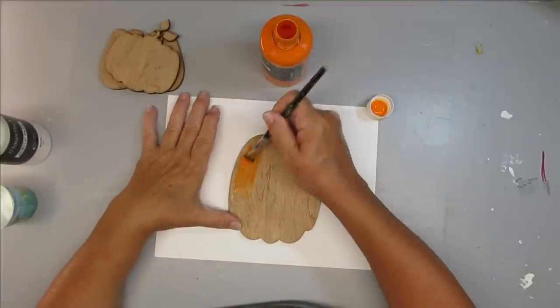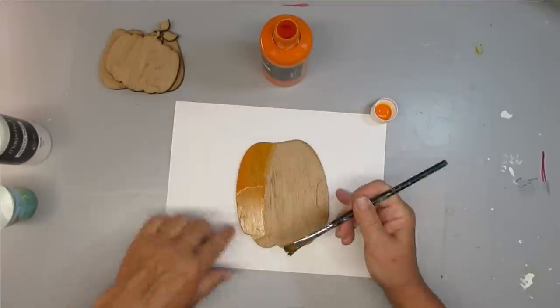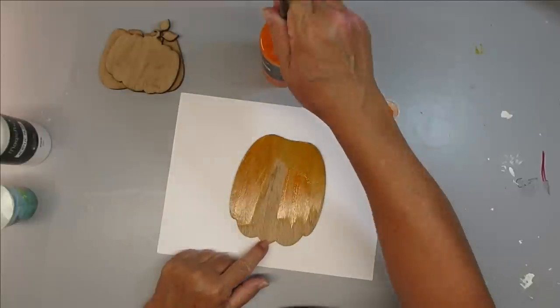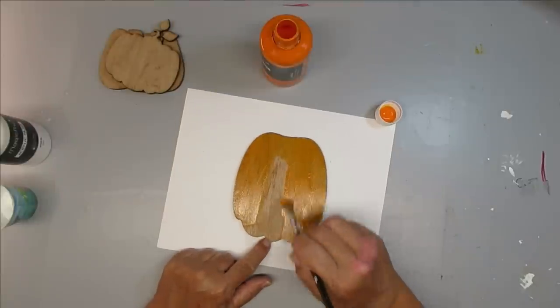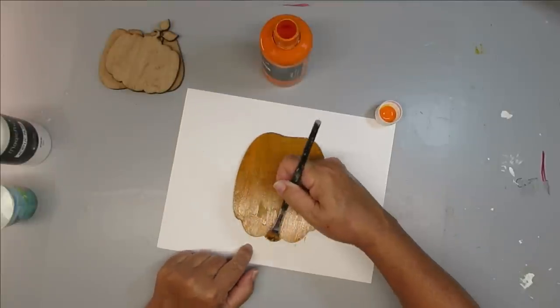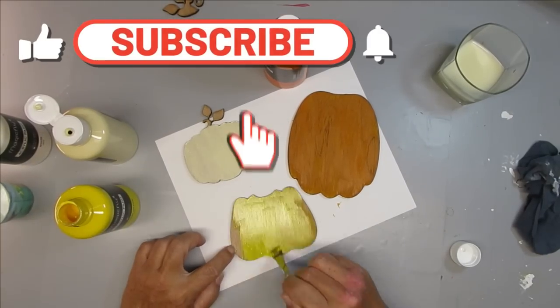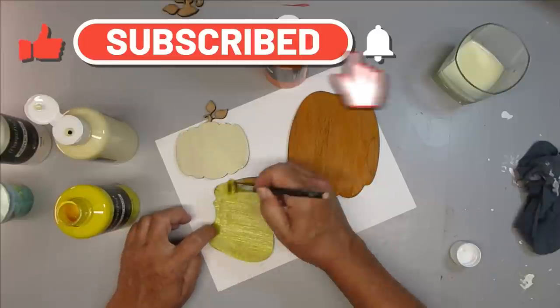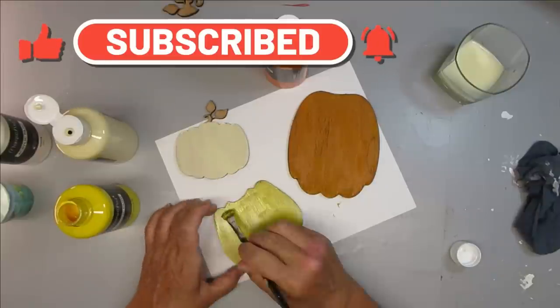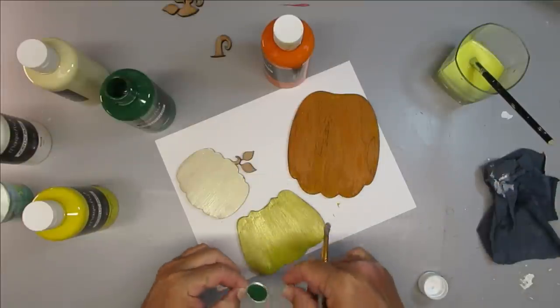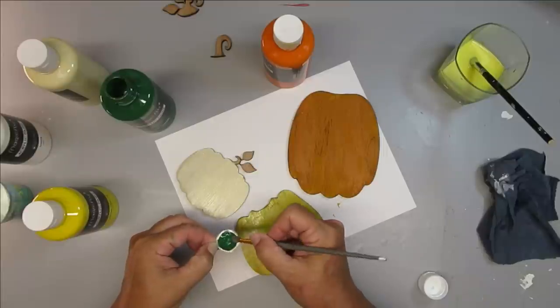I'm starting off my first project with these wood cutout pumpkins and I'm using the orange. Now it does come on more like a stain with the wood which is something that I actually like. I love being able to see the wood grain through. However if you wanted it to have a much more opaque color you would definitely need to do at least two or three coats.